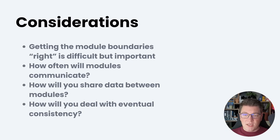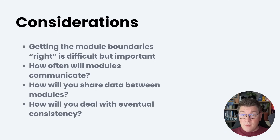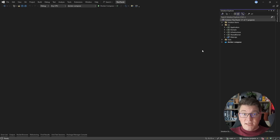One last question is how you're going to deal with eventual consistency. This typically happens when using messaging to implement communication between modules. In that case, there's going to be a period where data is consistent inside of one module but not yet propagated into the other. You need to think about what kind of impact this will have on your application at runtime. If eventual consistency is a big problem, that might be a warning sign that your module boundaries are incorrect.